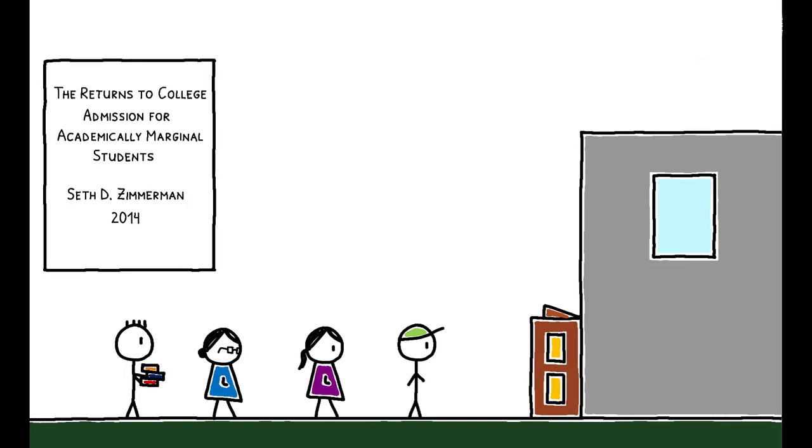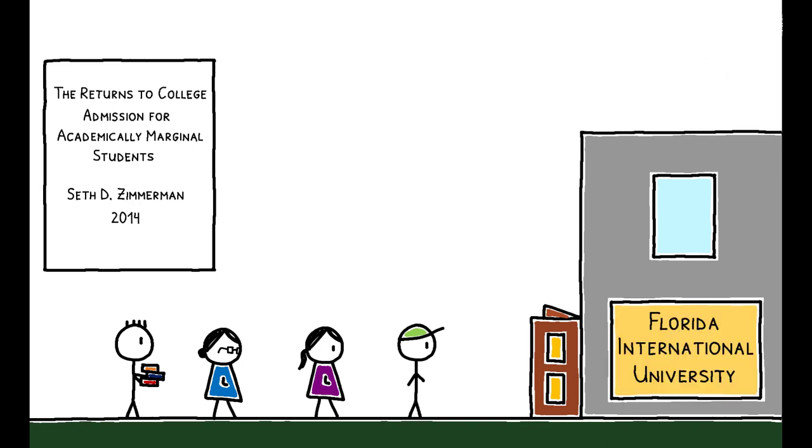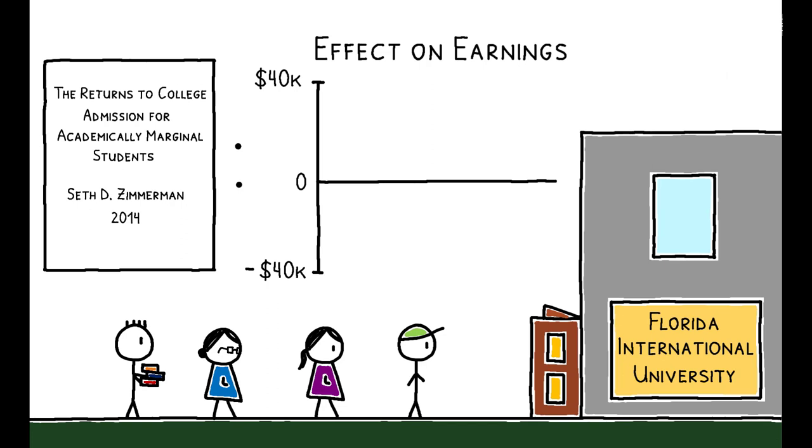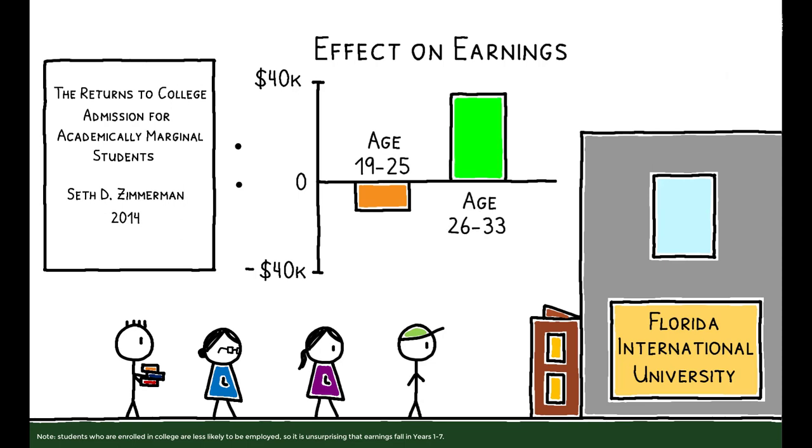To illustrate, consider expanding access to college. The authors draw from a 2014 paper studying the impact of admission to Florida International University. This work finds that FIU admission causes students' earnings to fall in the first seven years after admission, but earnings rise in years 8 to 14.